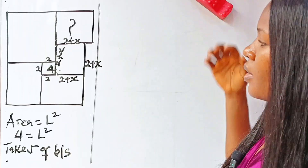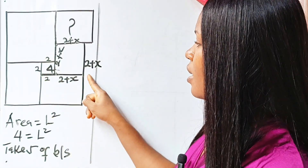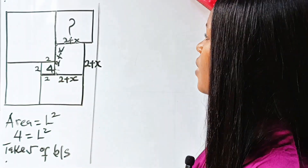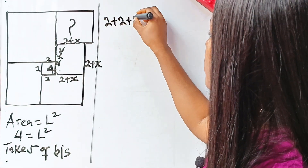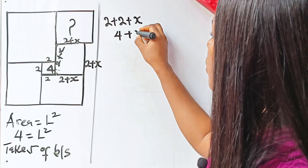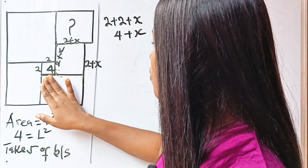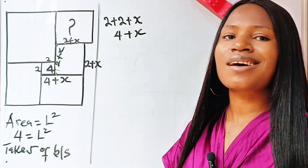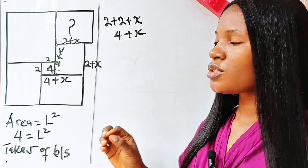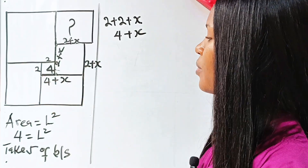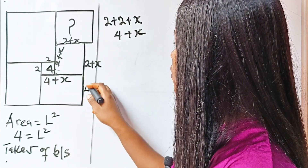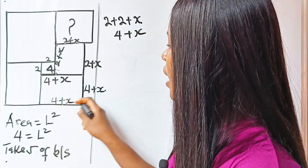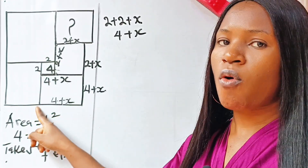Now, from here to here is 2 + x, so from here to here will be 2 + (2 + x), which equals 4 + x. So the whole of this line is 4 + x. Because this is a square, this length from here to here is 4 + x, this side is 4 + x, and this side from here to here is also 4 + x.